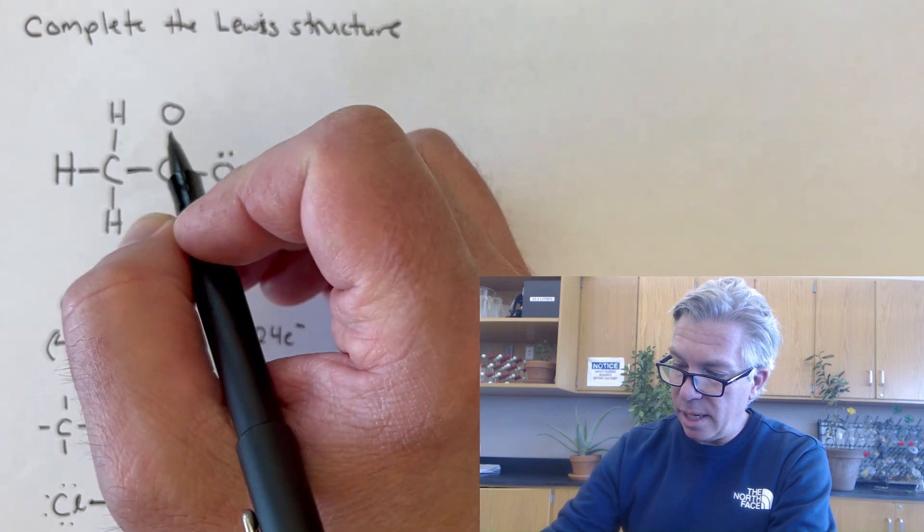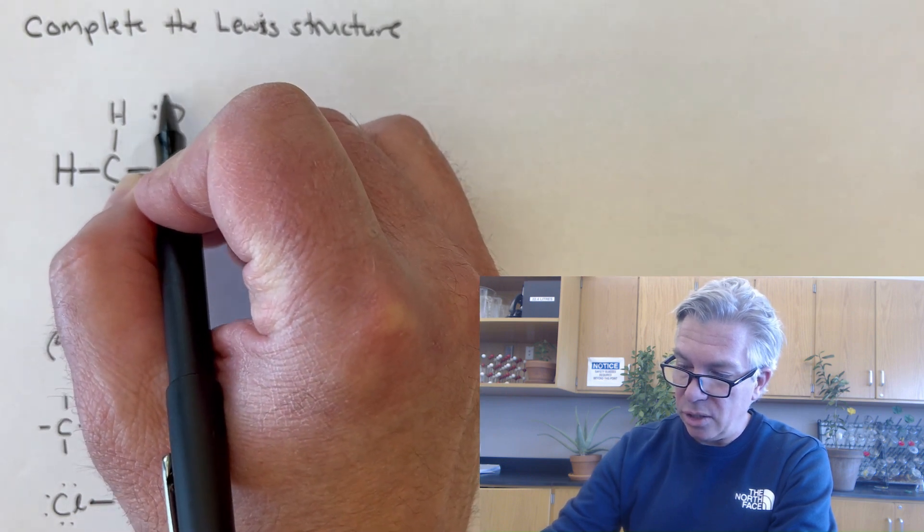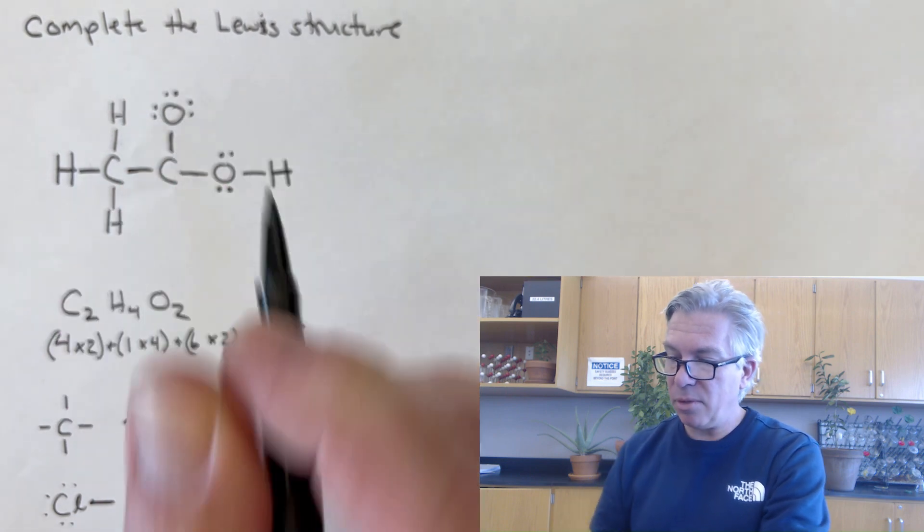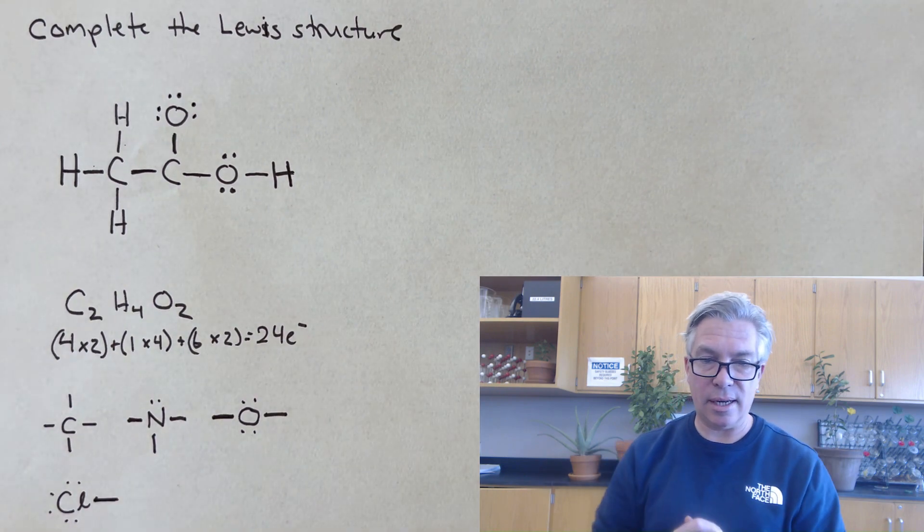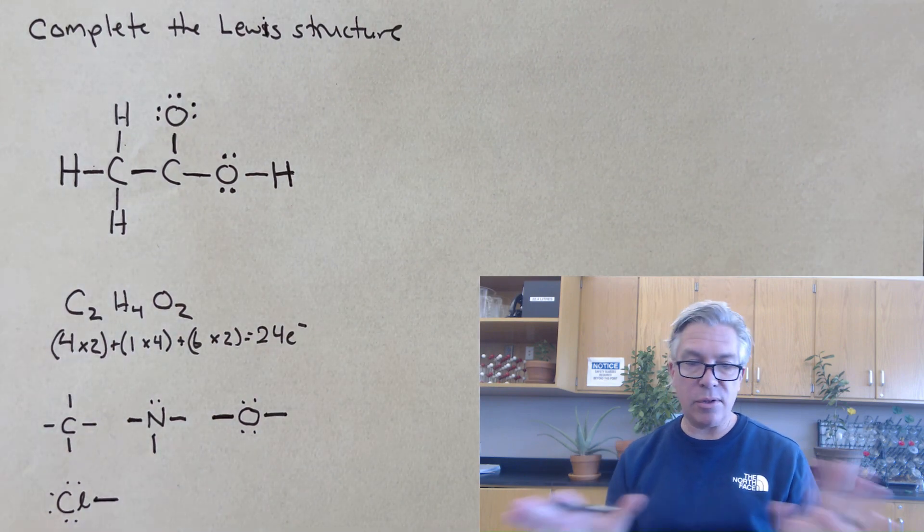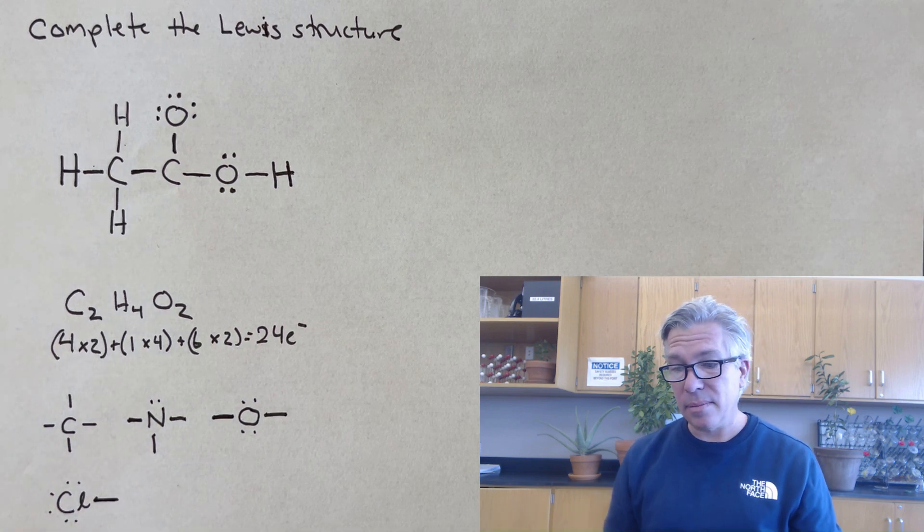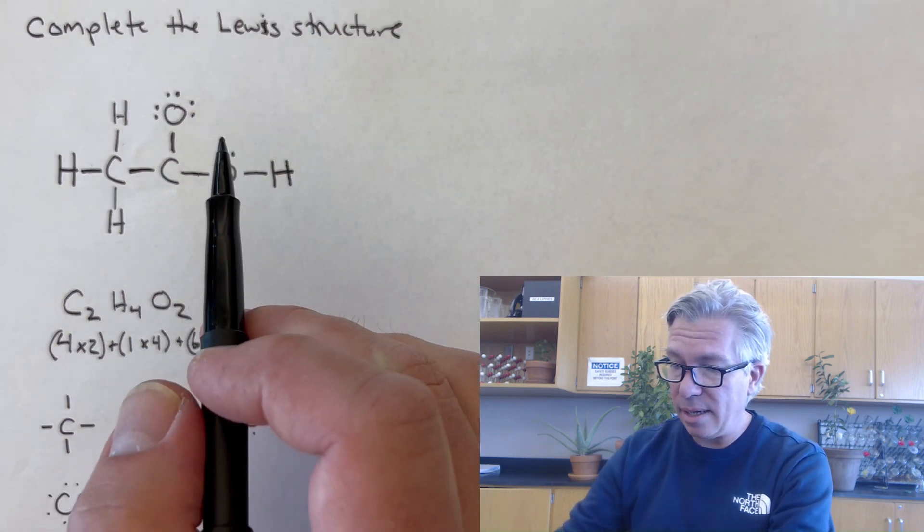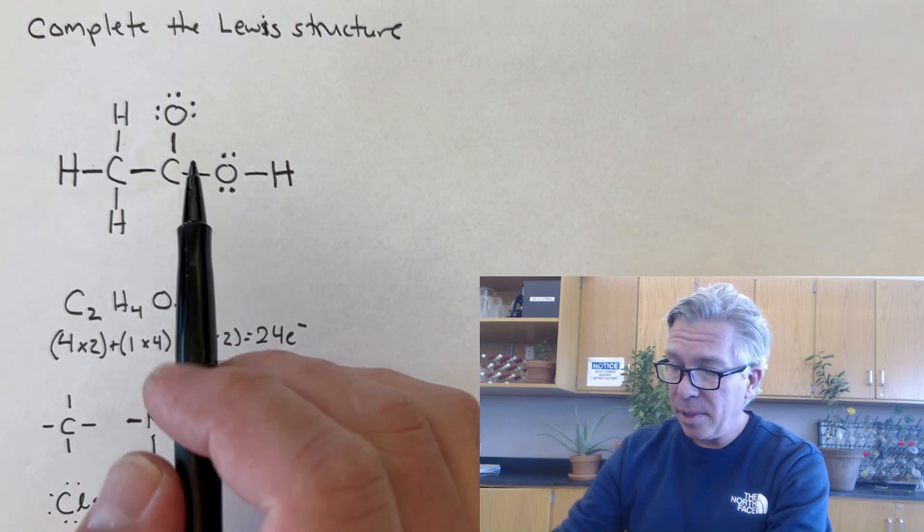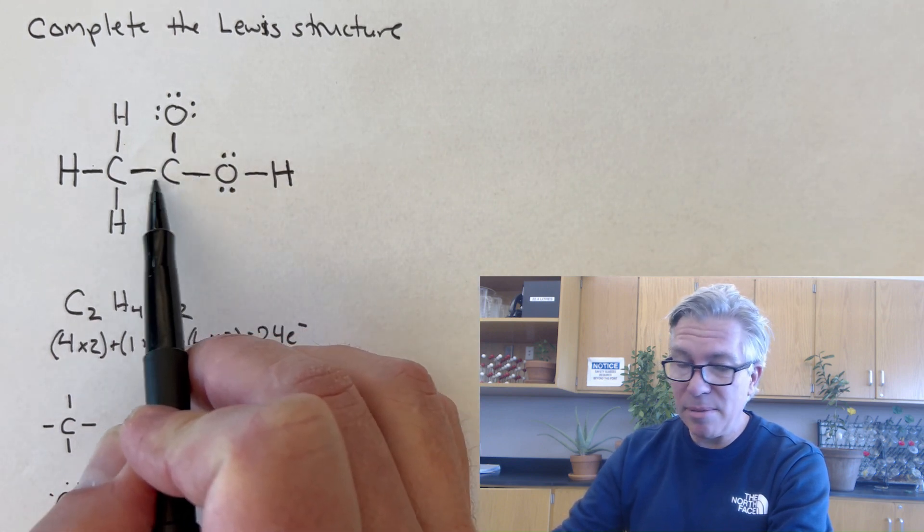Then we have six more electrons to go. I might go up here and, just for fun, I'm going to change this in a second, let's put the remaining six on that oxygen that's just sticking out there. That's great. I've used up all 24 of my electrons, but I have a problem. The problem here is that they're not all arranged optimally.